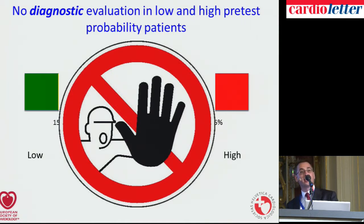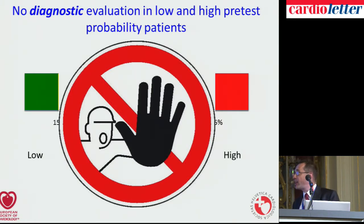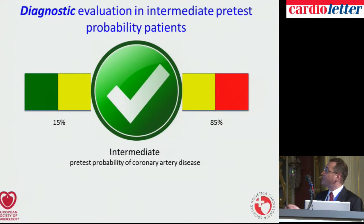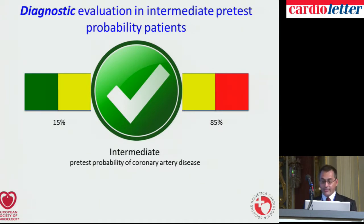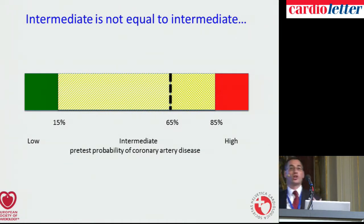In contrast, patients with a high pretest probability of coronary artery disease should go directly to coronary angiography, because non-invasive modalities don't add diagnostic value. It may sometimes make sense to use those tests for prognostic considerations, but not for diagnostic reasons. Patients in the intermediate pretest probability range undergo non-invasive testing. However, this intermediate probability range has now been split, depending on the method considered.